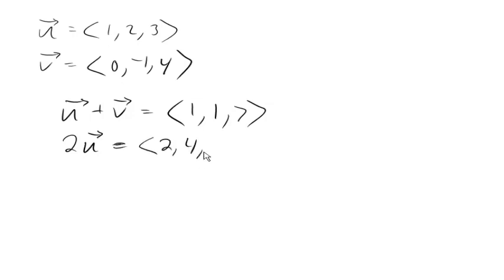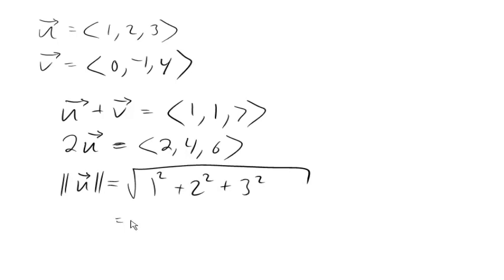If I need to find the magnitude of a vector, the double bars here meaning magnitude or length of the vector, then we can basically use the distance formula to find the length of the vector. It's gonna be the sum of the squares of the components. So 1 plus 4 plus 9 here, root 14, as the magnitude of that vector.